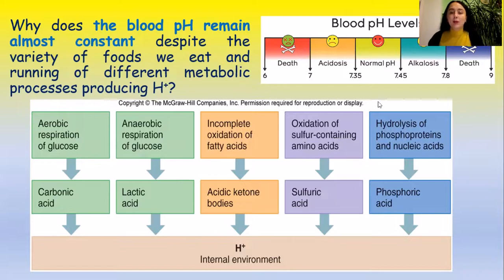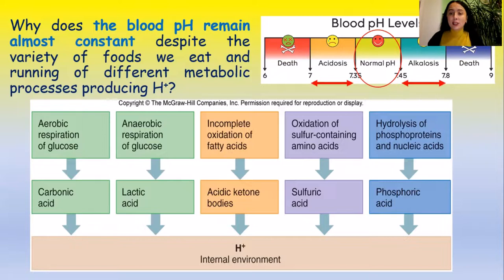But the blood of a healthy person copes with maintaining pH in a very normal range between 7.35 and 7.45. Changes of pH by more than this away from this range lead to death. So maintaining a constant blood pH is critical for proper functioning of our body.